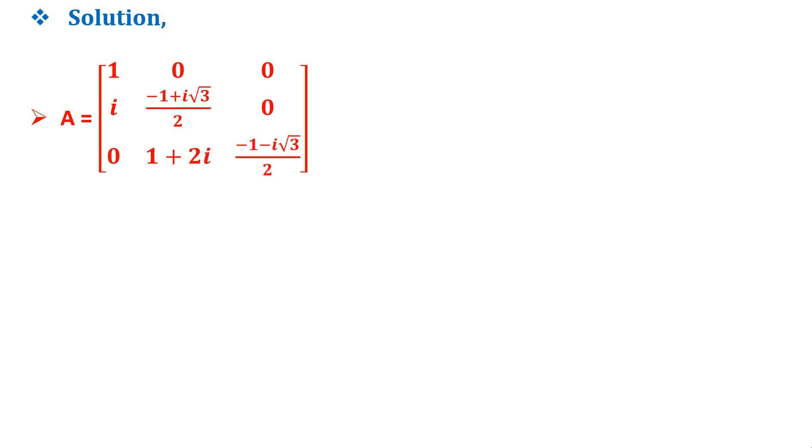The given matrix A is as follows and the eigenvalues are 1, minus 1 plus i root 3 by 2, and minus 1 minus i root 3 by 2, as it is a lower triangular matrix. Which means that lambda is equal to 1, omega, and omega square, and omega cube is equal to 1. The cube root of unity.